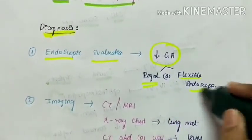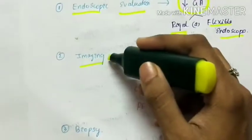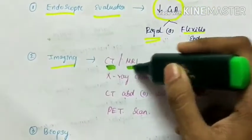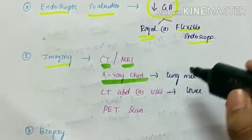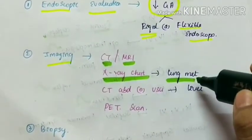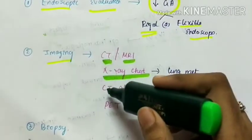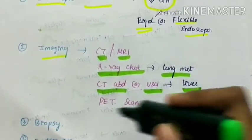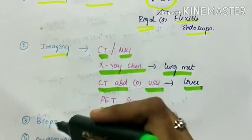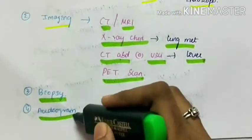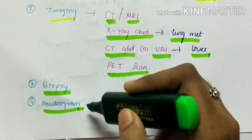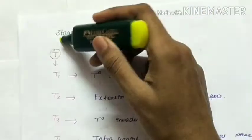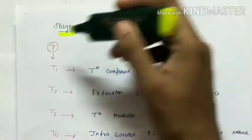The diagnosis of nasopharyngeal carcinoma: First, endoscopic evaluation under general anesthesia, using rigid endoscope or flexible endoscope. Next comes imaging - the modalities are CT, MRI, chest X-ray to detect lung metastasis and for anesthetic purposes, CT abdomen or ultrasonography to see the liver, and PET scan. Third is biopsy, and fourth is audiogram for detecting hearing loss.